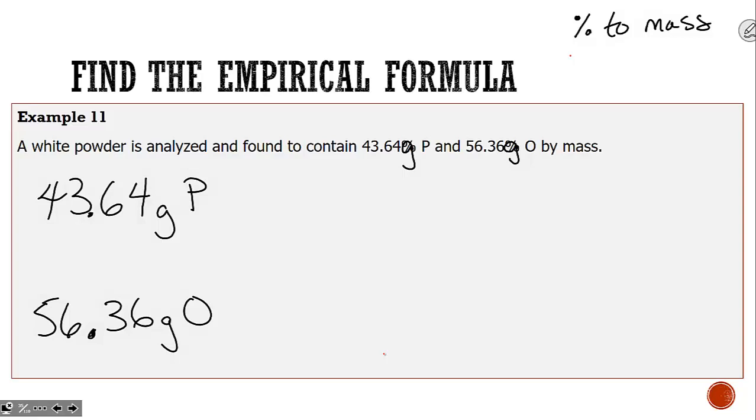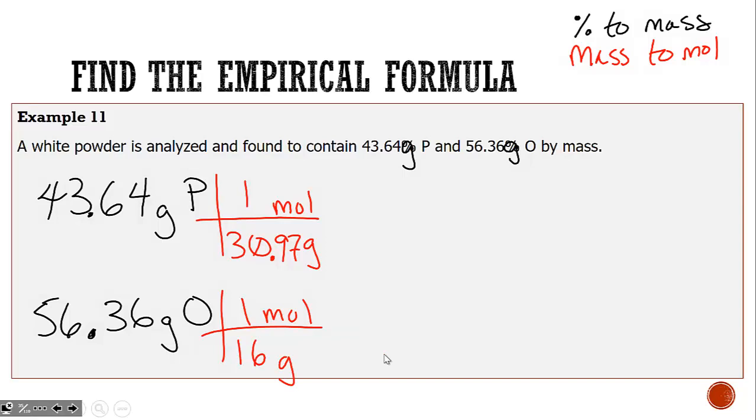The next step is mass to mole. One of the most important things you'll do in this class is figure out how many moles you have. To go from grams to moles, we use the molar mass off the periodic table. One mole of phosphorus is 30.97 grams, one mole of oxygen is 16 grams. We'll take 43.64 divided by 30.97 to get 1.409 moles of phosphorus, and 56.36 divided by 16 to get 3.5225 moles of oxygen.